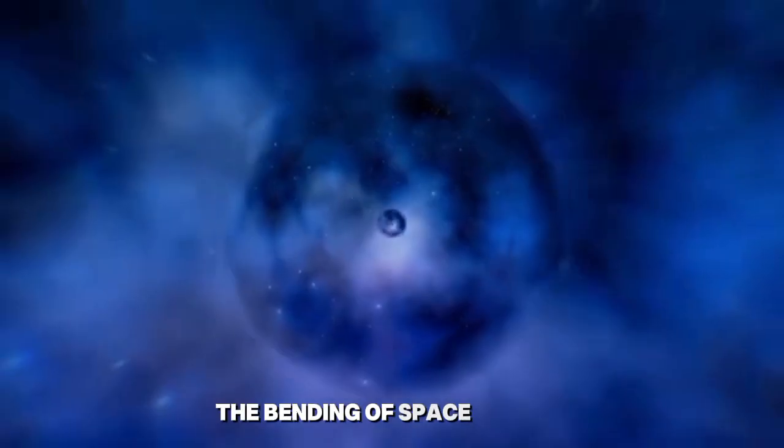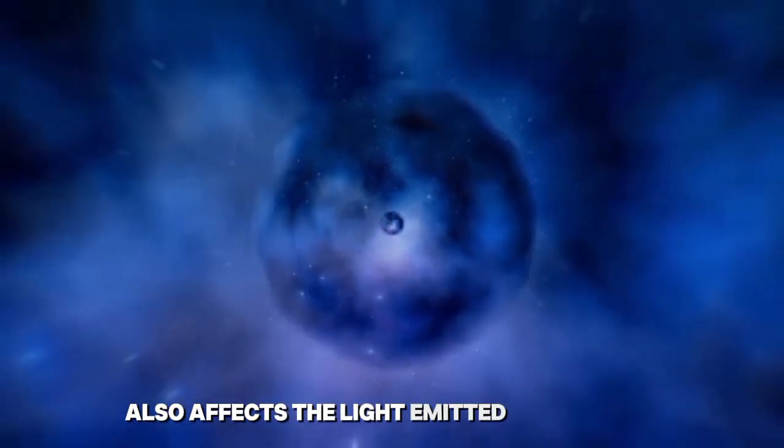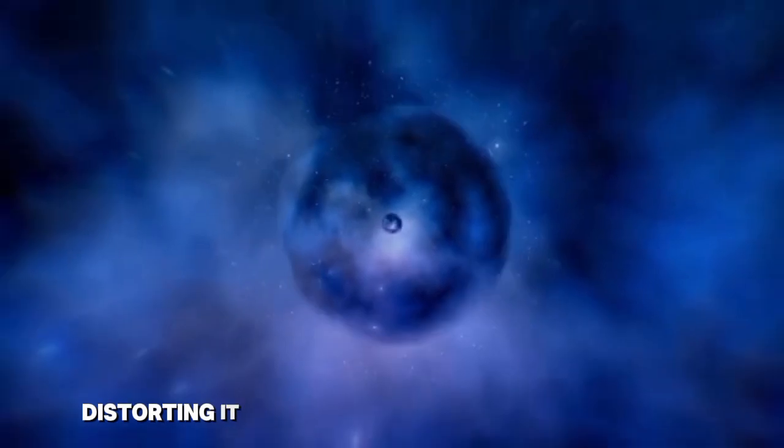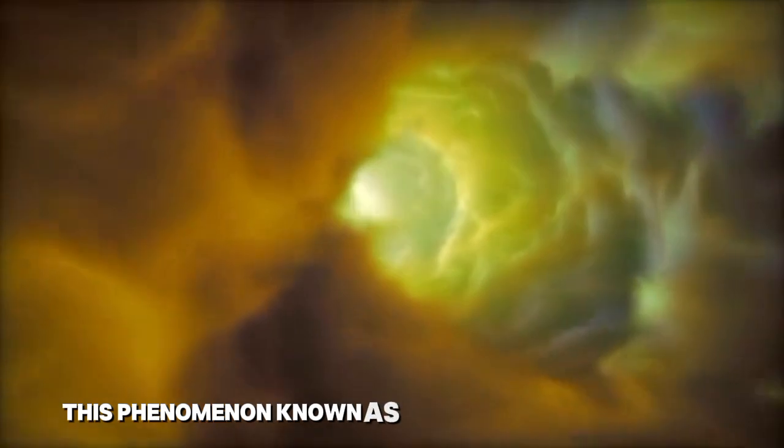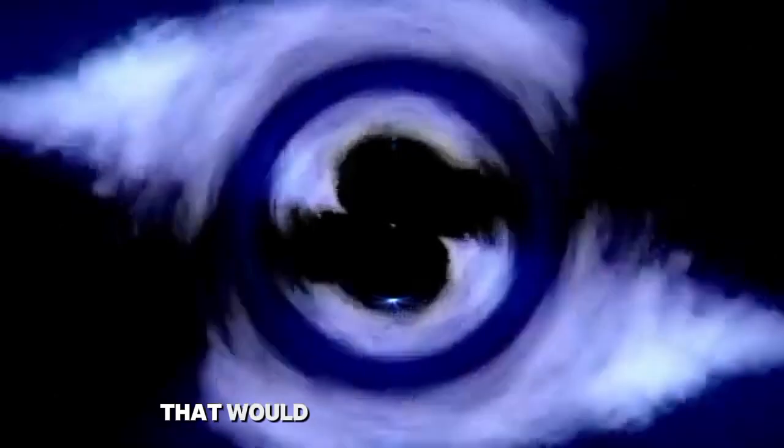The bending of spacetime also affects the light emitted by stars, distorting it as it passes near massive objects. This phenomenon, known as gravitational lensing, allows us to see distant objects that would otherwise be invisible.